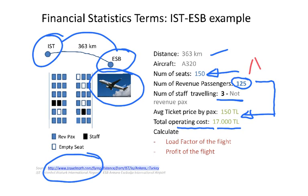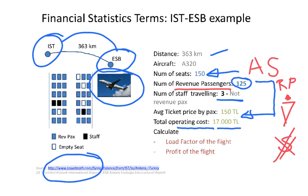The number of seats means AS, which stands for Available Seats. Then we have Revenue Passengers, the passengers who were traveling, which are called RP. When we talk about revenue passengers, we are talking about the number of passengers, not money. Then we have Load Factor, which is LF — not LH, which is the code for Lufthansa. So: AS is available seats, RP is revenue passengers paying for their tickets, and LF is load factor.